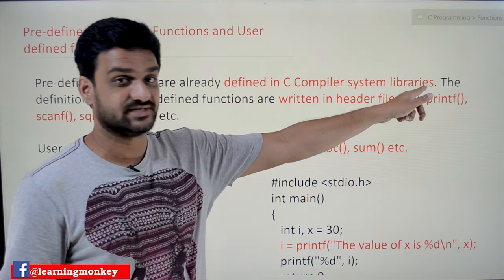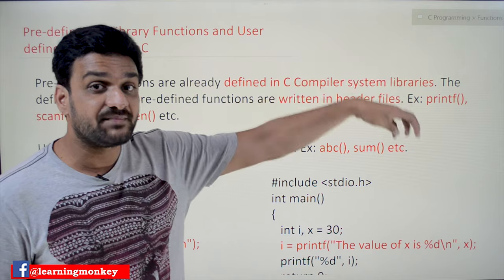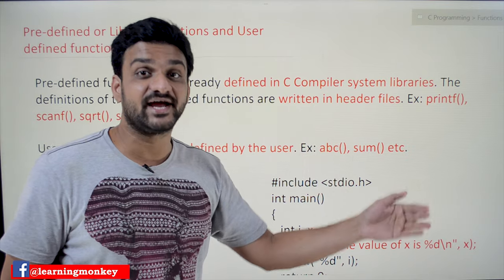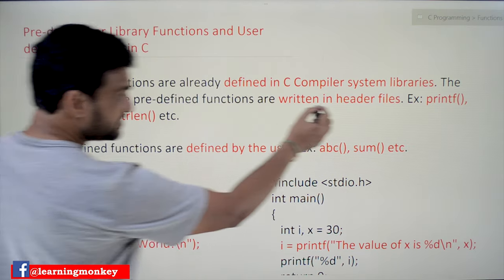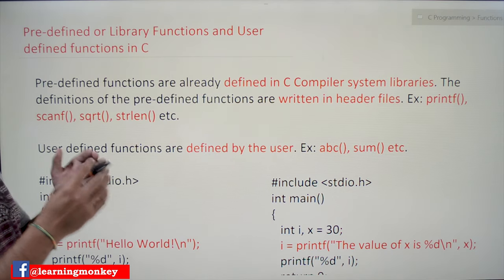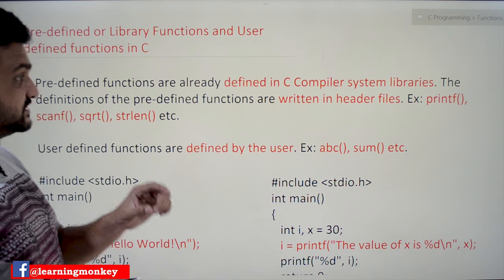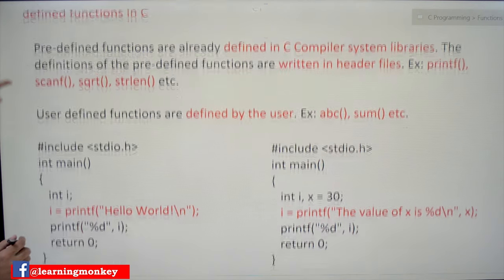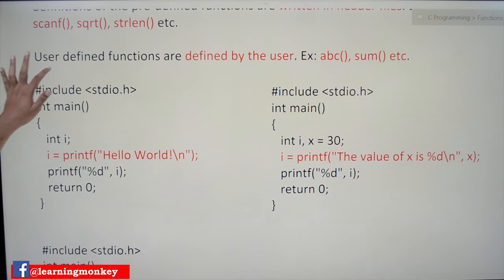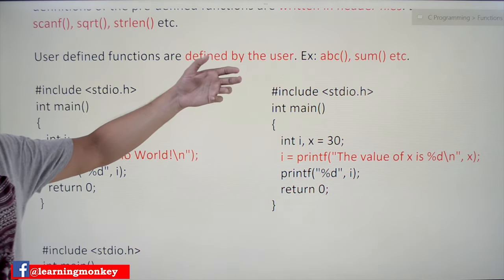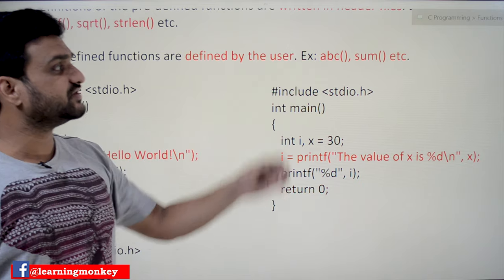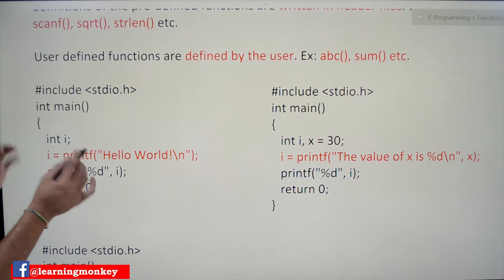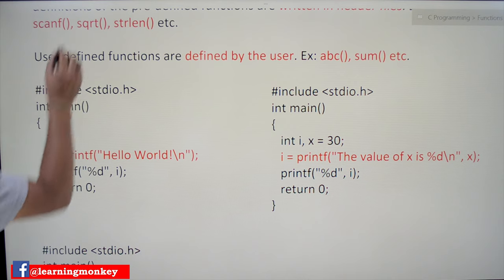They are defined in the C compiler system libraries. System libraries means the programming part of the compiler — in that programming part, those functionalities have been defined and written in header files. As for user-defined functions, there is no need to explain much here — in our previous classes, the functions that we defined, which are defined by the user, are called user-defined functions. Those are the kind of functions we have seen in our previous videos.